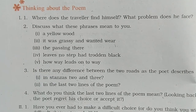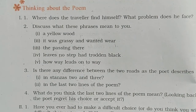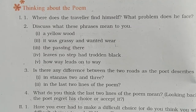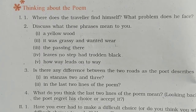Question number 3, first part: Is there any difference between the two roads as the poet describes, in stanzas 2 and 3? Answer: As far as the poet could see, both roads looked equally attractive. But one of them was covered with grass, and it appeared few people had ever taken that road — it was more inviting. Second, in the last two lines of the poem: the poet chooses one of the roads and wonders how different his life might have been if he had chosen the other road. Perhaps he is not happy with the choice he made.